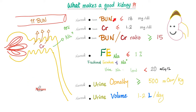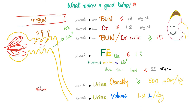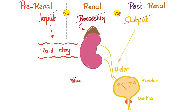A good kidney keeps serum BUN below 18 and creatinine below 1.2, with a BUN-to-creatinine ratio above 15. It does not waste sodium — fractional excretion of sodium (FeNa) is less than 1%, and urine sodium is less than 20 mEq/L. A good kidney concentrates urine, so urine osmolarity is high (greater than 500), and urine volume is between 1 and 2 liters per day.